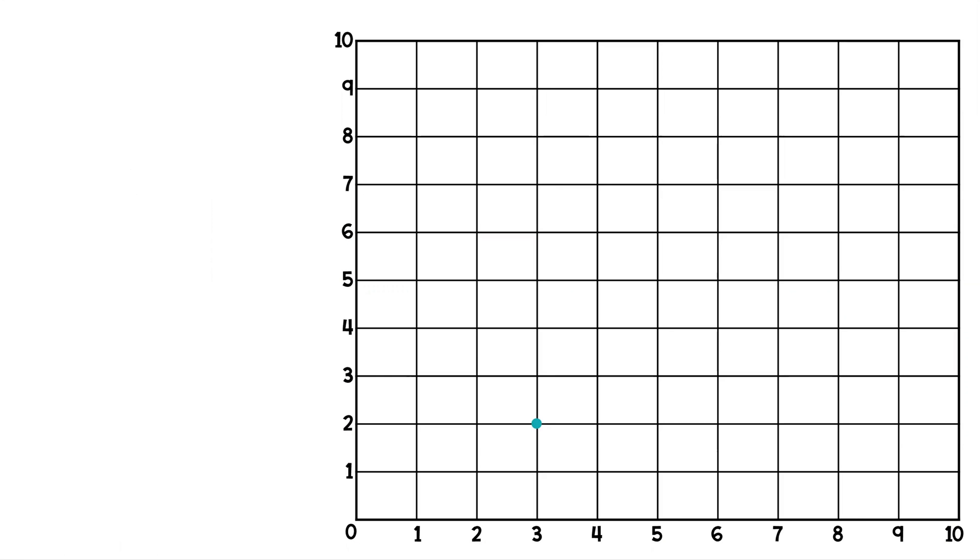Now, we could try doing it the opposite way, where we have a point on here already on our graph, and then we have to figure out what the ordered pair is. We have here a 3. We also have a 2. Now, the question is, do we start with the 3, or do we start with the 2? Well, which one's our x-axis? This one right here is our x-axis. So it's going to be a 3 followed by a 2. There's our ordered pair, 3, 2.